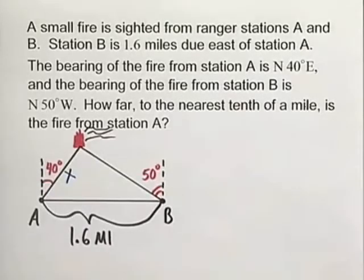One of the first things you want to do is draw a drawing like I have here. We have station A on the left, station B on the right. Note that they are 1.6 miles apart, B being due east of station A.